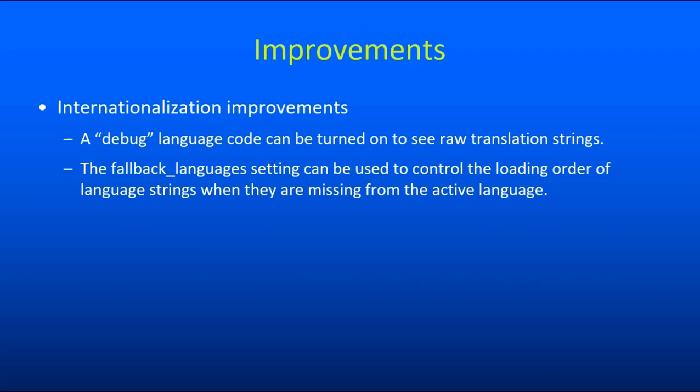There's also a new setting called Fallback Languages, which can be used to control language inheritance. Previously, if ViewFind tried to translate a string and it wasn't available in the currently active language, it would always default to English. But with this setting, you can specify different fallback languages instead and in order of searching.